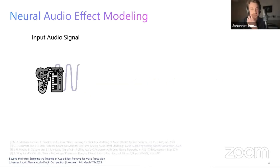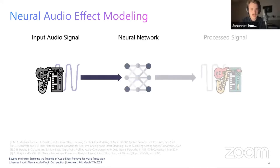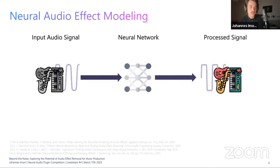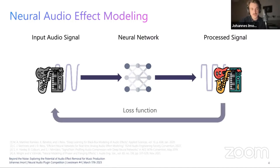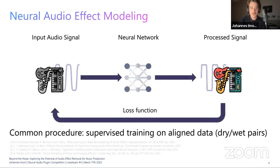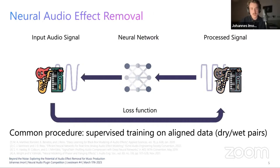There has been extensive previous research on neural audio effect modeling using a black box approach. The input audio signal is usually fed to a neural network and we obtain the processed signal. There's a loss function which calculates the difference between the target and the input. A very common procedure is supervised training on aligned data — you have dry data on one side and affected or wet data on the other.